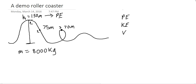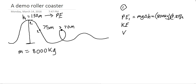For position 1, we know potential energy at 1 is going to be mgΔH. Our m is 8,000 kilograms, g is 9.81 meters per second squared, and our change in height is 150 meters. The nice thing about position 1 is that there's no motion because we haven't gone down the hill yet, so our kinetic energy is just zero joules, and our velocity is also zero meters per second.